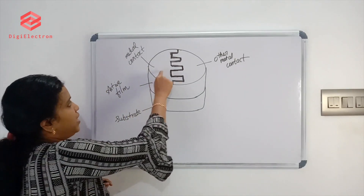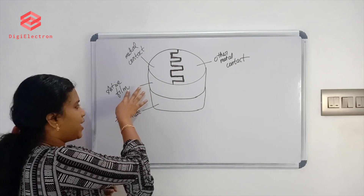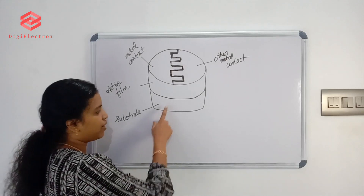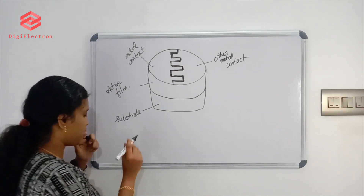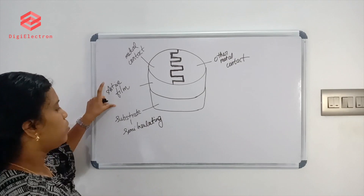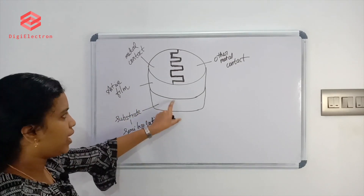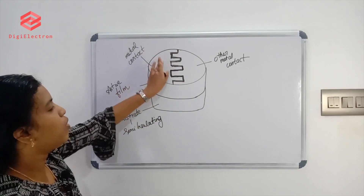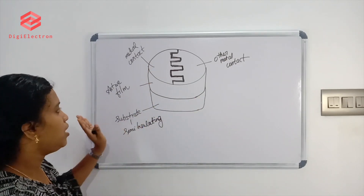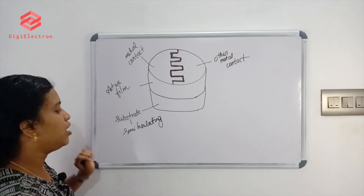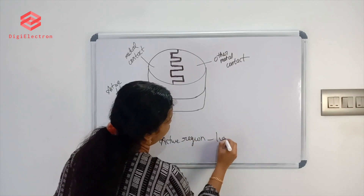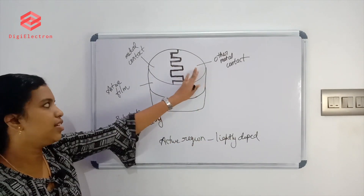This is the structure of the LDR. It has two metal contacts and an active region deposited on a semi-insulating substrate. Light is incident on the active region, which is lightly doped.